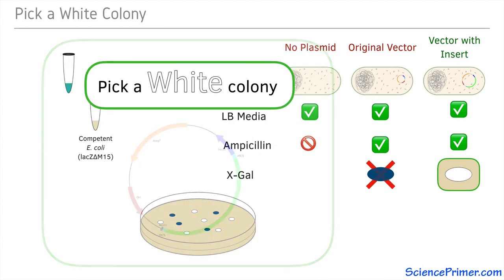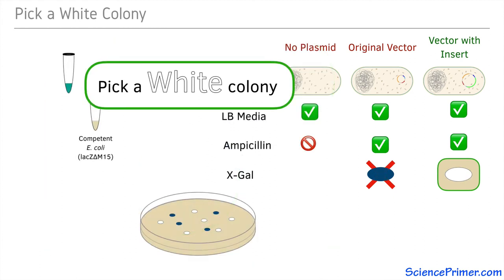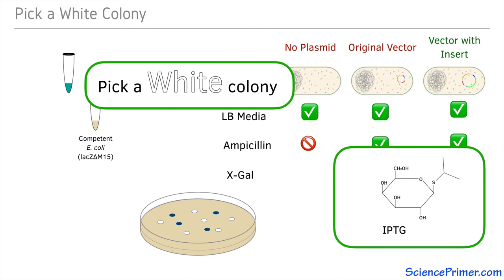In addition to X-gal, many protocols call for the addition of a compound called IPTG. Like X-gal, IPTG shows some structural similarities to lactose. Unlike X-gal, it is not acted on by beta-galactosidase, but its structural similarity to lactose makes it an inducer of the LAC operon.